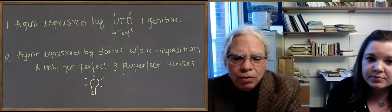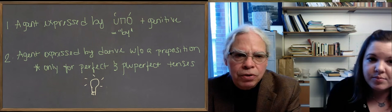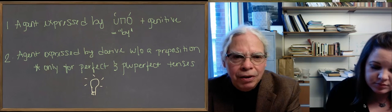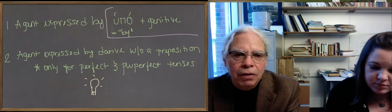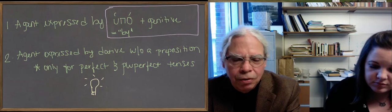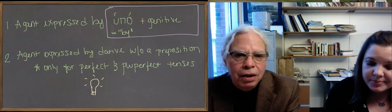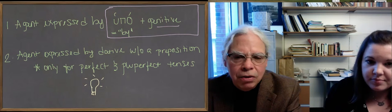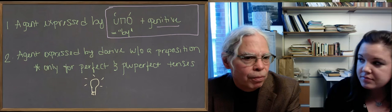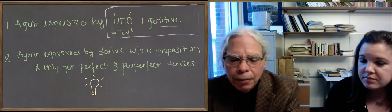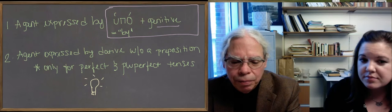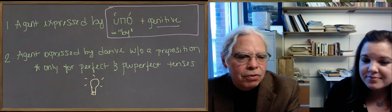And that is you translate the English word by with the preposition upa, H-U-P-O with an accent on the O. And the object of the preposition, the me, if there is a me or the person or whatever it is, that is the agent, goes in the genitive case. Very straightforward, totally consistent all the way through Greek. That works for any kind of passive verb with an agent construction.